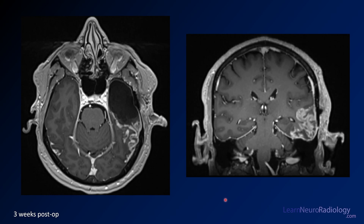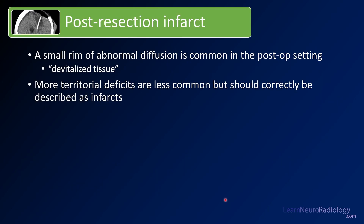This post-resection infarct is a common complication after resection. When you see just a small rim, that's very common in the post-op setting and we tend to call it devitalized tissue — we don't want to call it a complete infarct. But when you see wedge-shaped and territorial defects, you should describe those as infarcts, as they are from interruption of the proximal vascular supply.